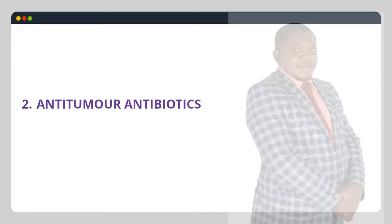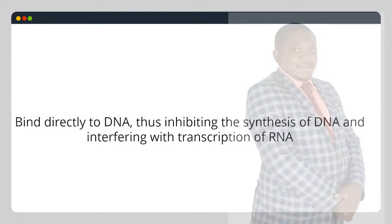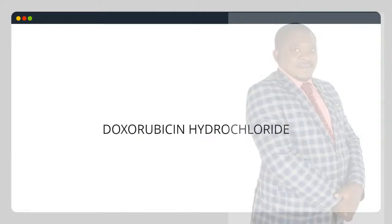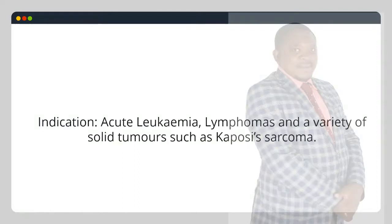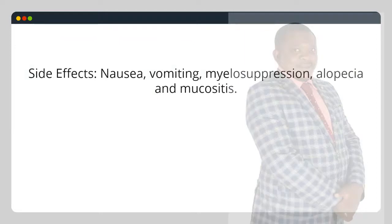2. Antitumor antibiotics: cell cycle phase non-specific agents. They bind directly to DNA, thus inhibiting the synthesis of DNA and interfering with transcription of RNA. Doxorubicin hydrochloride — indication: acute leukemia, lymphomas and a variety of solid tumors such as Kaposi's sarcoma. Dose: up to a maximum of 450 mg/m² body surface area infusion for 21 days. Side effects: nausea, vomiting, myelosuppression, alopecia and mucositis.